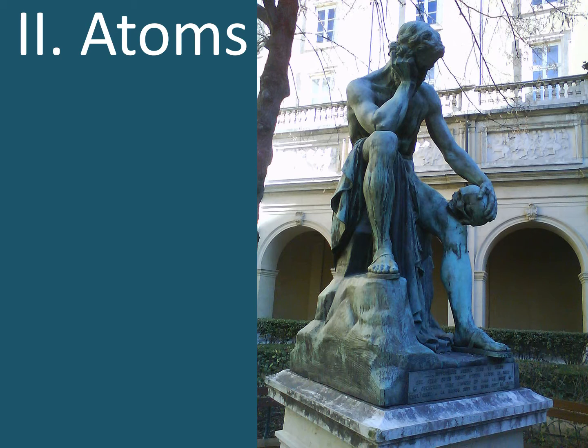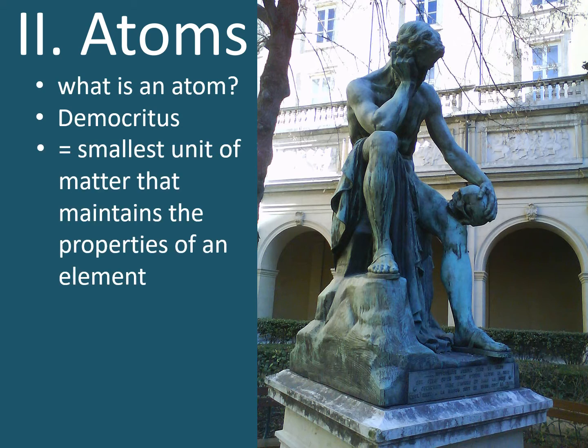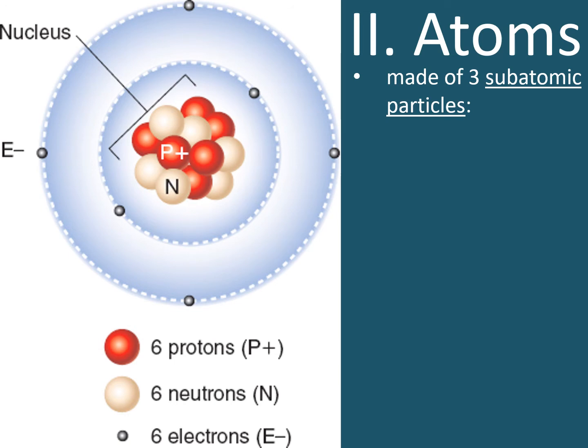So what are atoms? Atoms are the smallest unit of matter that maintains the properties of an element. We now know that matter is made up of atoms. But you might ask, what are atoms made of? Atoms are made up of even smaller particles called subatomic particles.